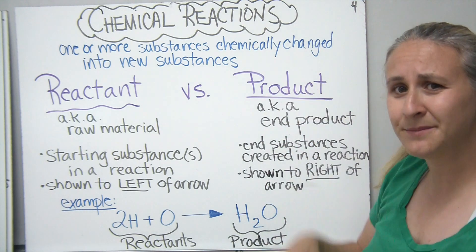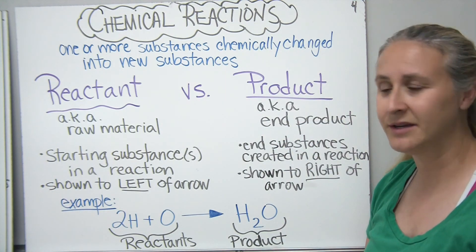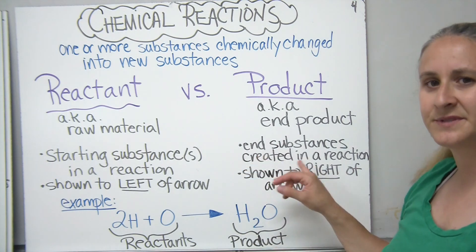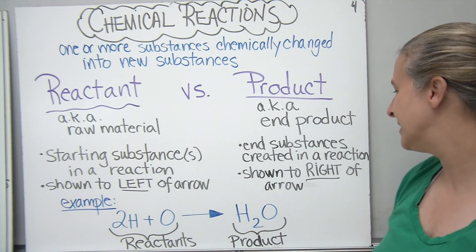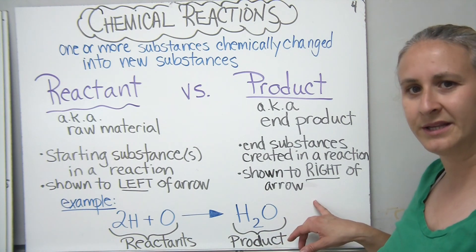The products, we also sometimes refer to them as end products. And these are the end substances, or the things that get created in the reaction, the things that are sometimes we call them made. These are typically shown to the right of the arrow.